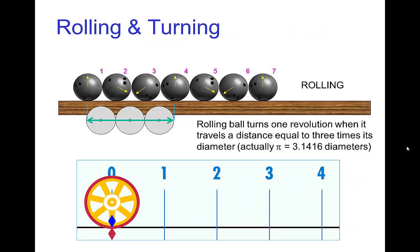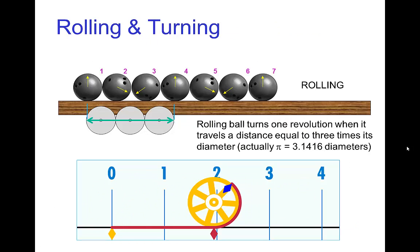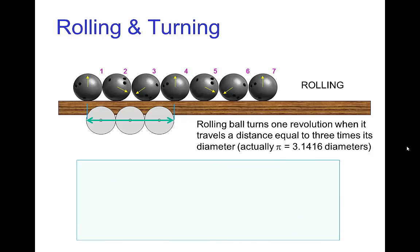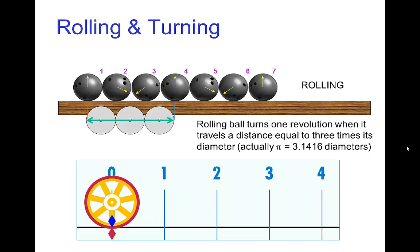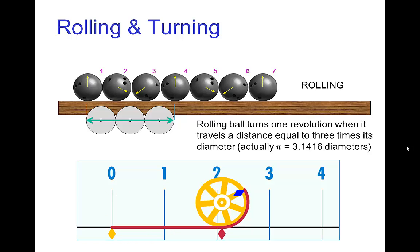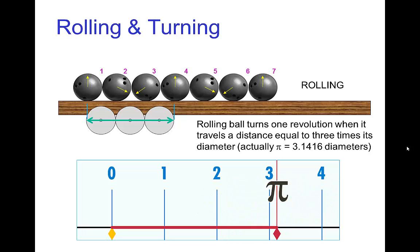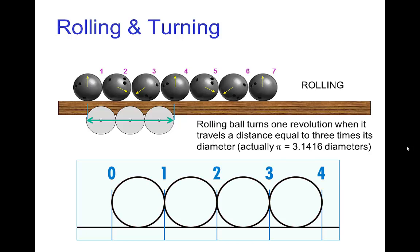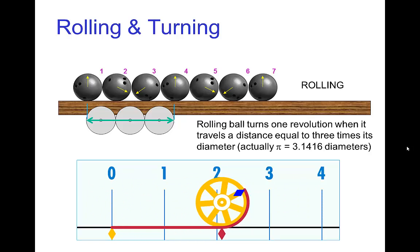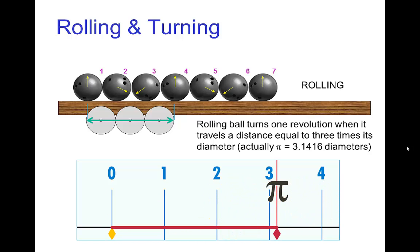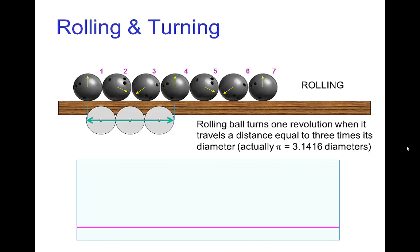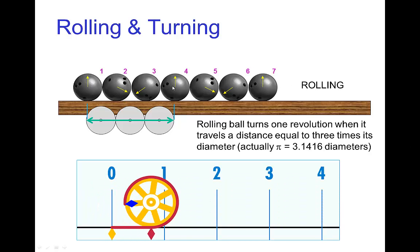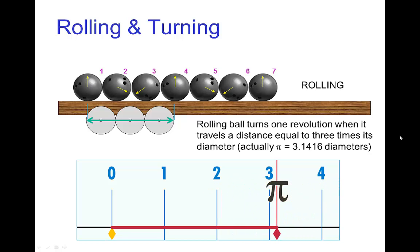As an object rolls, there's a close connection between the distance it travels and its rotation. A rolling ball will go a distance slightly greater than three diameters when it makes one revolution — slightly more than three being pi. We see this in this example: the ball goes around a little more than three diameters and then returns to its original orientation.